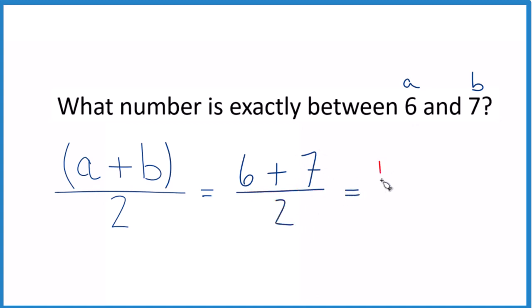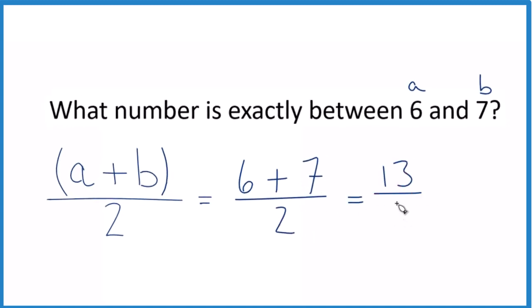6 plus 7, that's 13, and then we just bring the 2 across. So the number exactly between 6 and 7 is 13 halves.